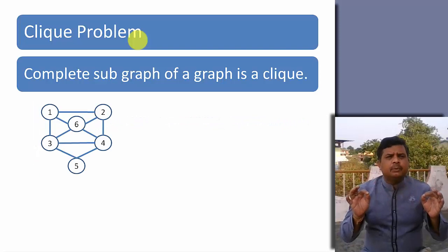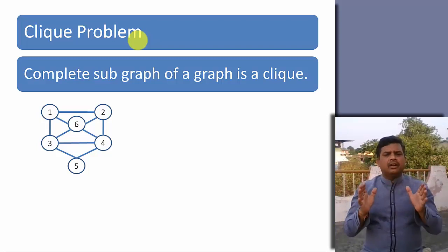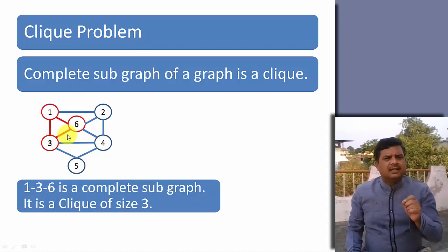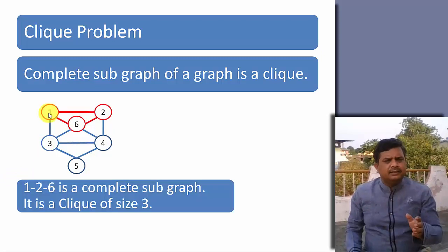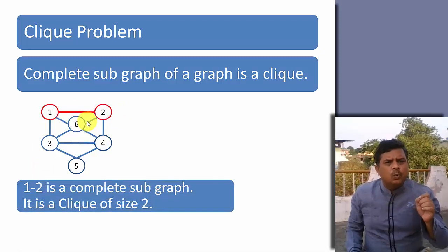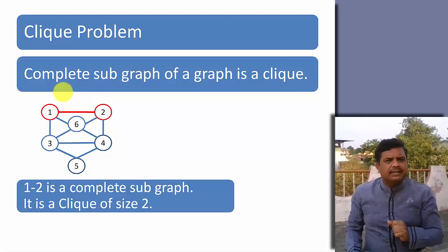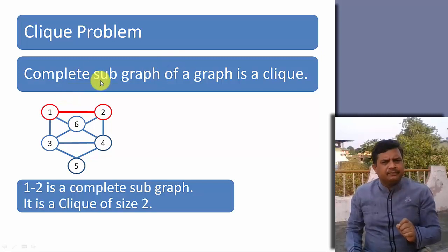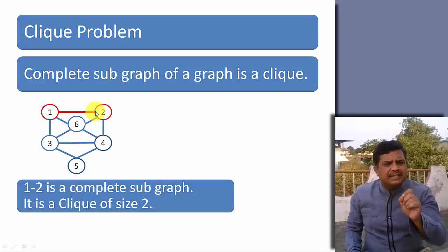In a very simple statement, if I want to define a clique, it is nothing but a complete subgraph of a given graph. In this graph, you can see vertex 1, 3 and 6 makes a complete subgraph of this given graph. So it is a clique of size 3. Similarly, I will be having one more clique of size 3 with vertices 1, 2 and 6.